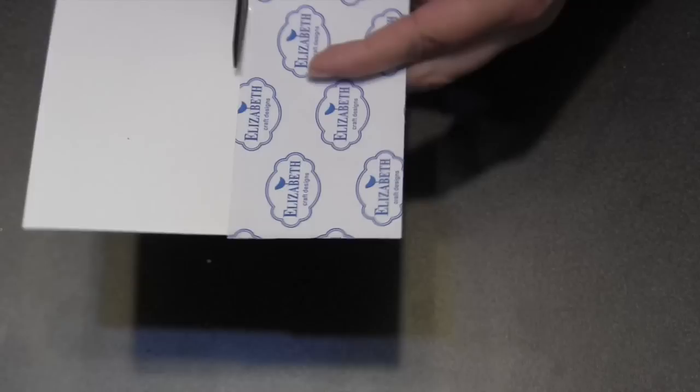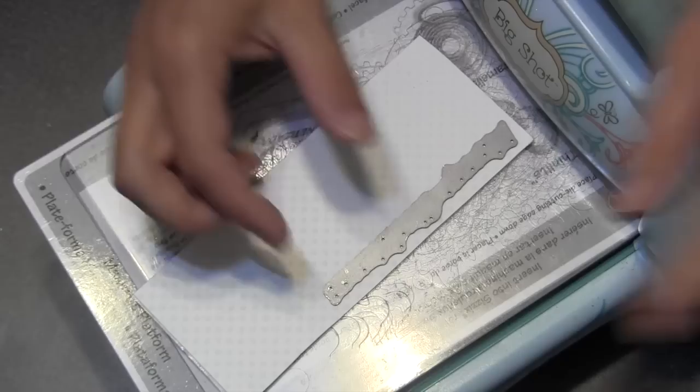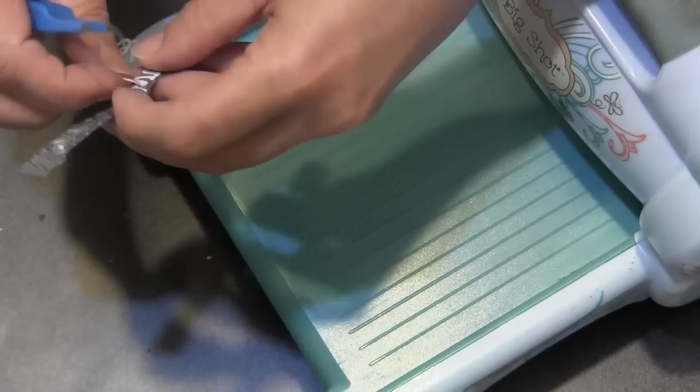And it also holds the glitter really, really well. It doesn't have any gaps in the adhesive to leave anything sticky. It's just wonderful stuff. So what I've done here is I've applied some double-sided adhesive to the back of some white cardstock, and then I'm going to use the Elizabeth Craft Designs Merry Christmas die and just die cut that through the cardstock and the double-sided adhesive so that it will be a sticker.